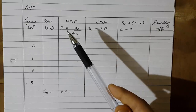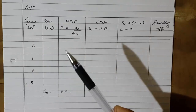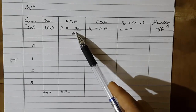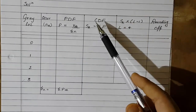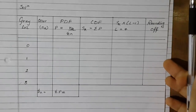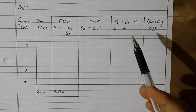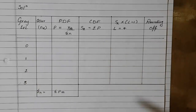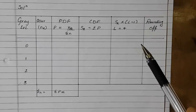The PDF, or probability distribution function, is the probability of occurrence of each gray level. It is calculated by the usual probability formula: the individual occurrence of a gray level divided by the total occurrences in the image. The CDF, or cumulative distribution function, S_k, is equal to the summation of p at each gray level. The second-last column is S_k × (L−1), where L equals 4 in this case because there are four gray levels. L is always the total number of gray levels, and L−1 is the highest gray level present.